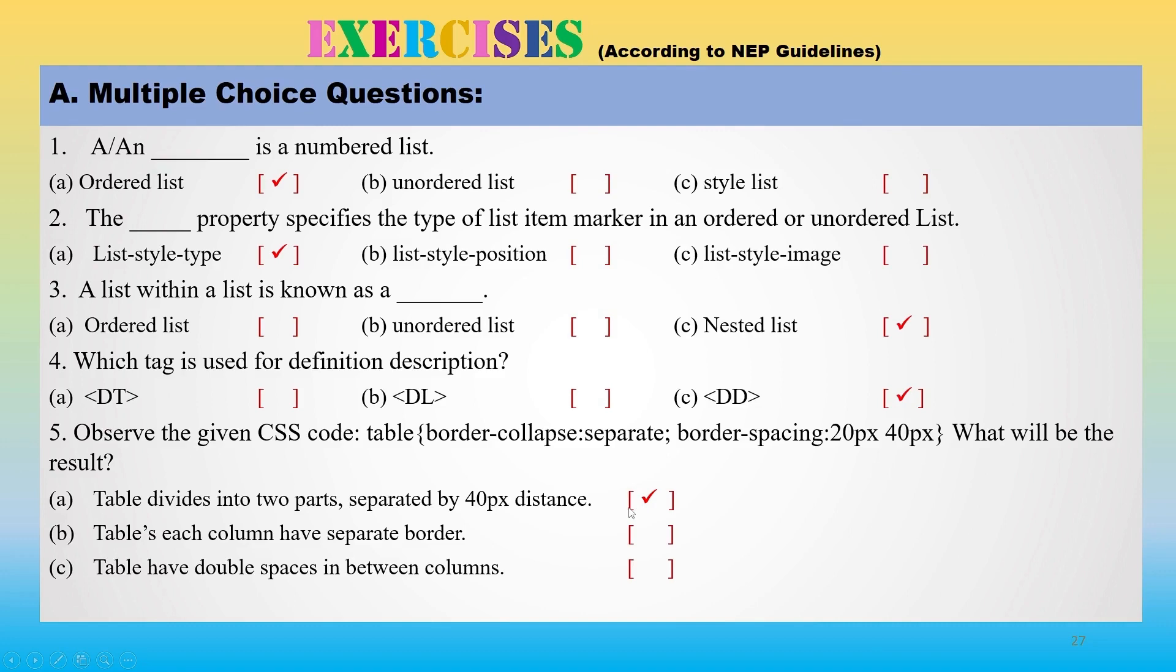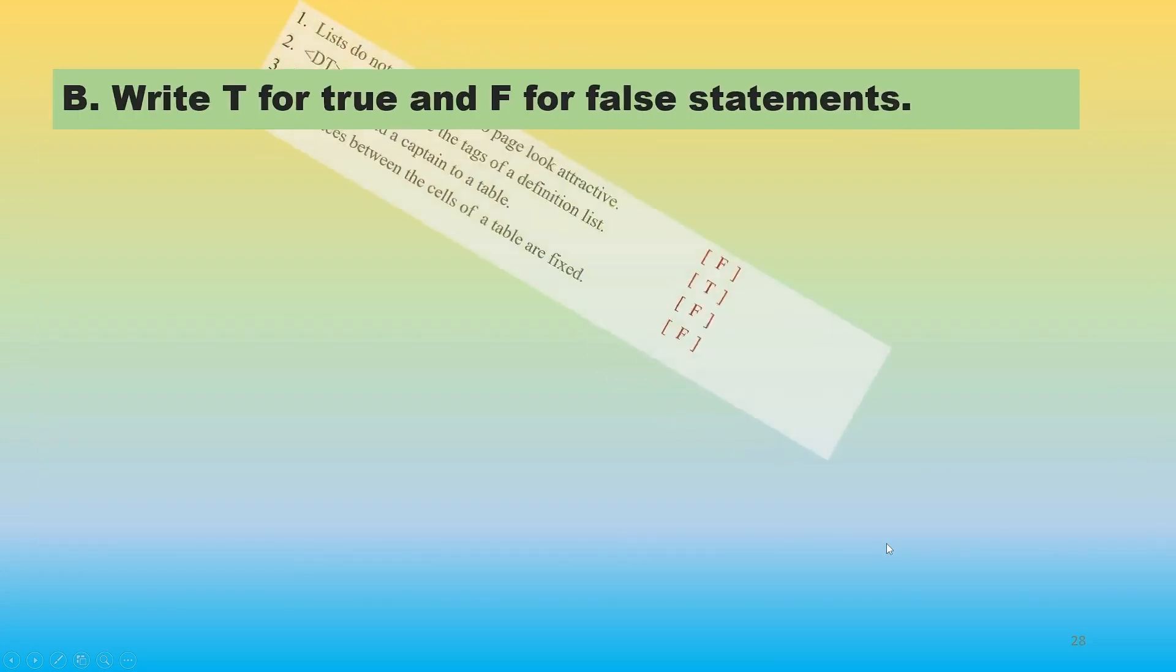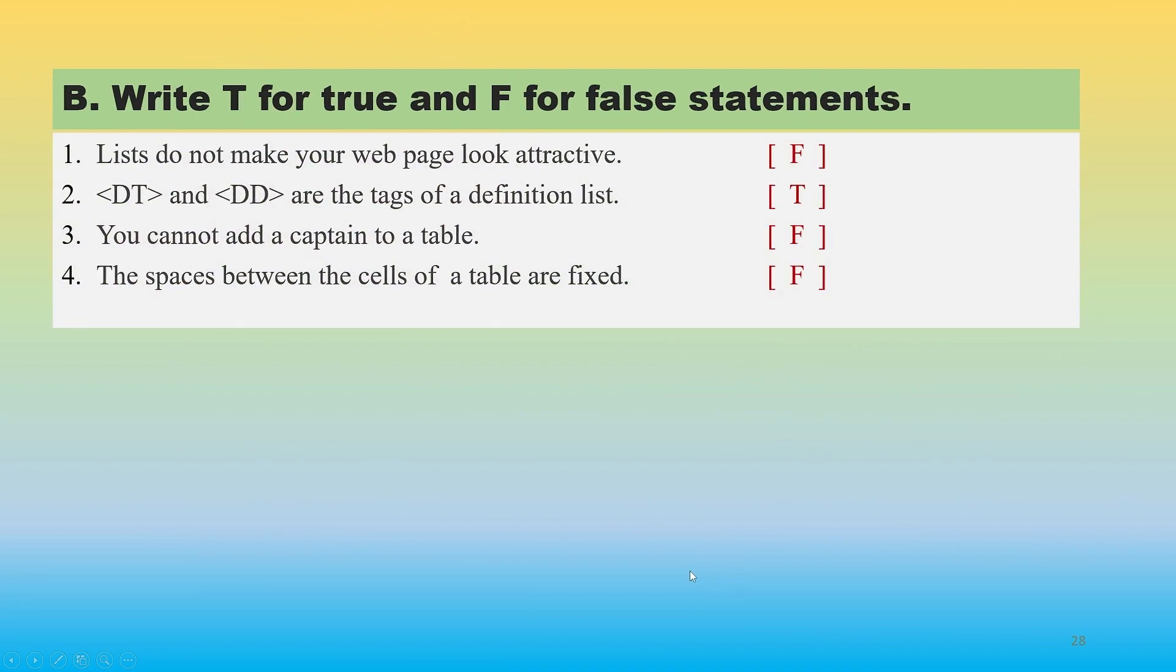Table's each column has separate border? No. Table have double spaces in between columns? No. So the appropriate answer is A. Next question is true/false. Lists do not make your web page look attractive. Lists make our page look attractive, so this is false.